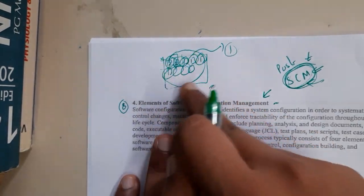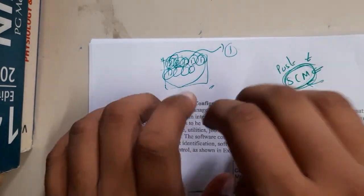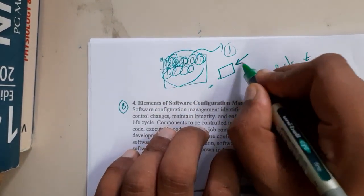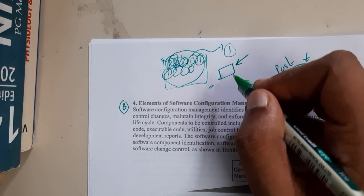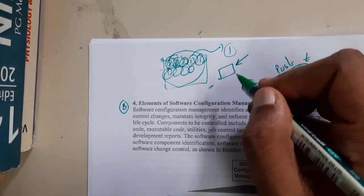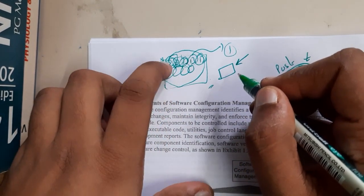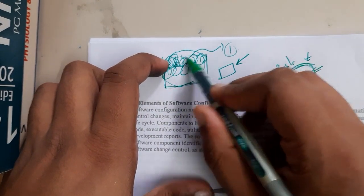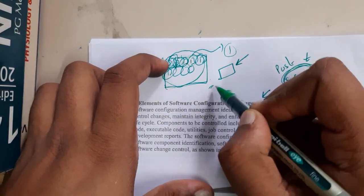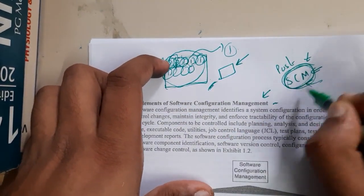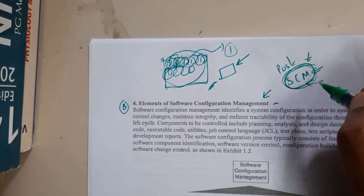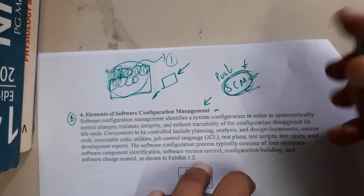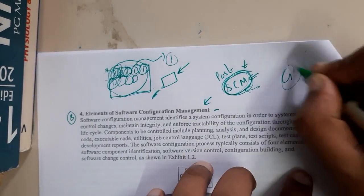When developers are working on a single project, they use some common files. If one developer updates a file, everyone else should also get that updated file. The SCM is the key person who takes care of that as well.